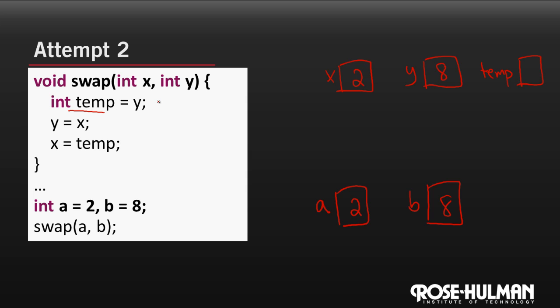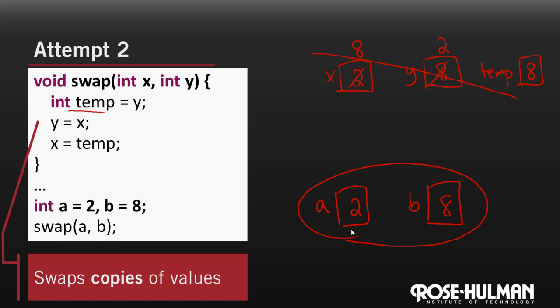And temp gets the value of y or eight. Then we can say that y gets x. So y becomes two. X gets temp. So x gets eight. And we've successfully swapped the values of the parameters. The thing is that when this function ends, both the parameters and the local variable go out of scope. And down here the values of a and b are unchanged. So we've just swapped copies of the values.